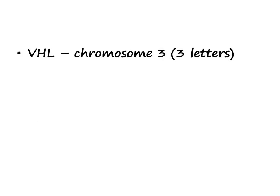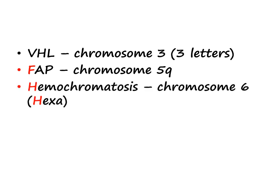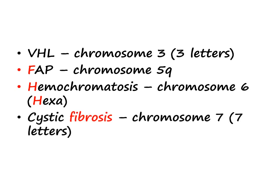VHL — Von Hippel-Lindau — is three letters, so it is chromosome 3p. Familial adenomatous polyposis: FAP starts with F, F for 5, so it is chromosome 5. Since we already have 5p for cri du chat, FAP is 5q. Hemochromatosis: H is hexa which is 6, so it's chromosome 6. Cystic fibrosis: 'fibrosis' is a seven-letter word, so it is chromosome 7.